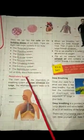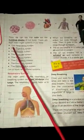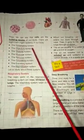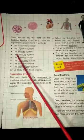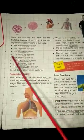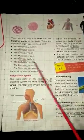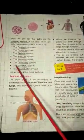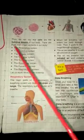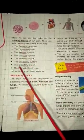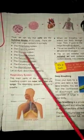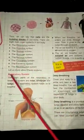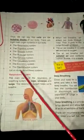We have 8 organ systems: respiratory system, digestive system, skeletal system, muscular system, nervous system, circulatory system, excretory system, and reproductive system. So number 1 is the respiratory system.